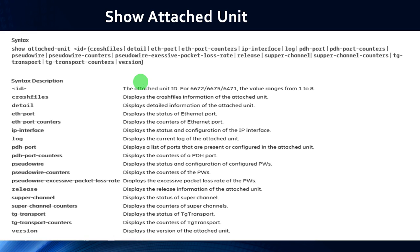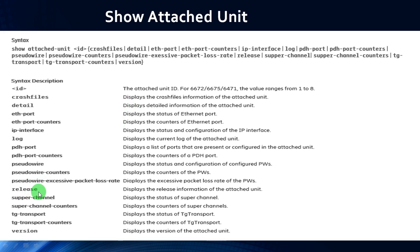If you want to display details about the attached unit configured with the router, use: show attached-unit <id>. To get detailed information, append detail. To display the status of the Ethernet port, use eth-port. To get the release information, append release at the end of the show attached-unit command.